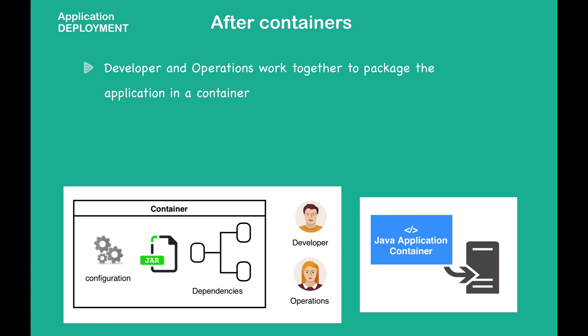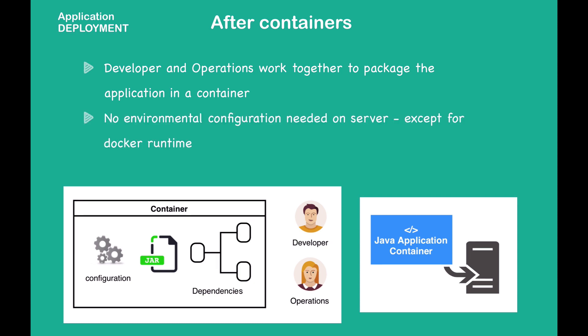This makes the deployment process much easier. No environmental configuration is needed on the server — the only one-time effort required is installing and setting up the Docker runtime on the server before you can run containers. Later in this tutorial, we'll also see how Kubernetes offers even more abstraction of the deployment environment to make deploying complex applications much easier than with the traditional approach.